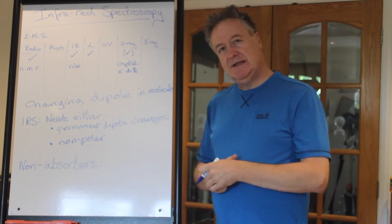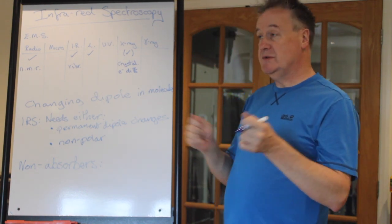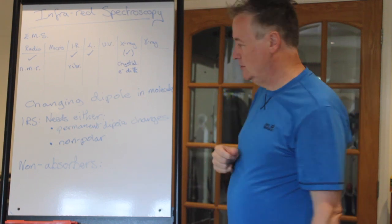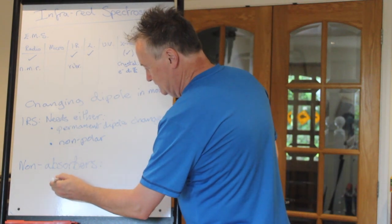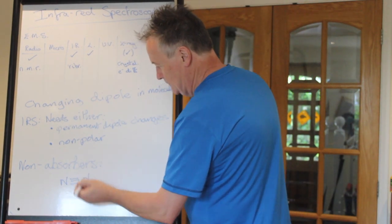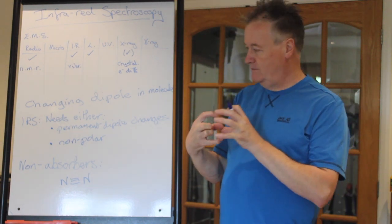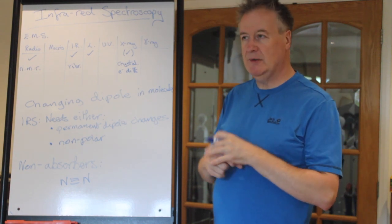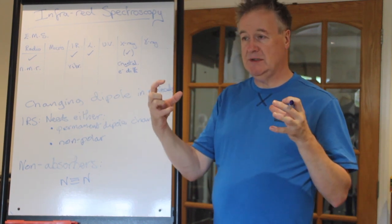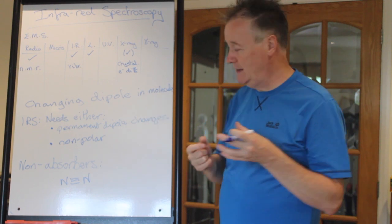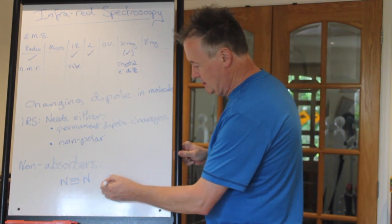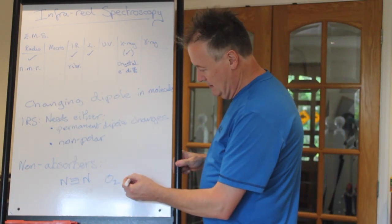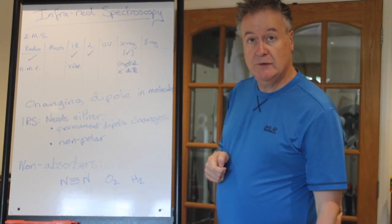So that does mean there are certain things that are so simple they do not absorb. Something that doesn't have a bond, noble gas, doesn't do anything with infrared, doesn't absorb it. Things like nitrogen with its triple bond, if you just lengthen the bond, it doesn't cause a dipole because it's too simple a molecule. It just becomes two things separated by a different distance but it's still symmetrical in every way. So it's a non-absorber. Other diatomic gases, they don't absorb in infrared either.